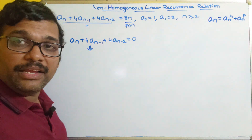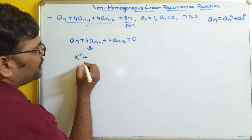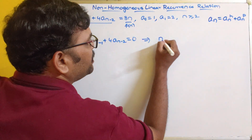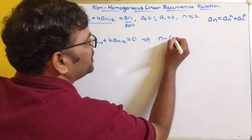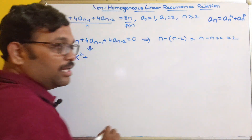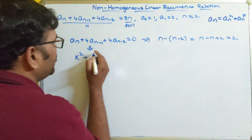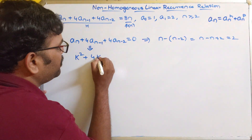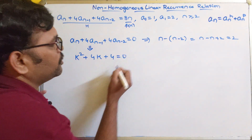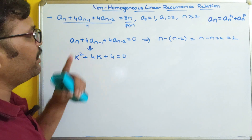First, the auxiliary equation. This can be converted into an auxiliary equation: k² + 4k + 4 = 0. It is second order because the highest subscript is n and the lowest is n-2, giving order 2. The nth term gives k², n-1 gives k, and n-2 gives k⁰. So this will be the auxiliary equation for the given recurrence relation.